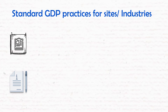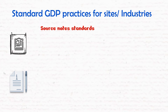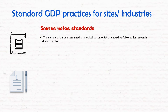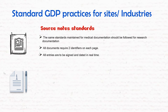There are certain standards for Good Documentation Practices used daily in clinical research sites and pharmaceutical manufacturing. The same standards used for medical record documentation must be applied to source notes and clinical research documents. Each and every page must have at least two identifiers to clearly describe which trial or manufacturing unit it belongs to. All entries should be signed and dated in real time to establish authorship and timing.